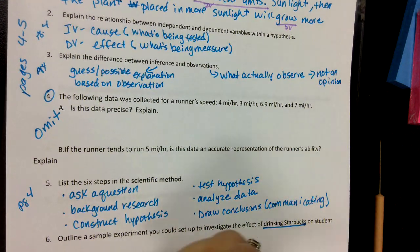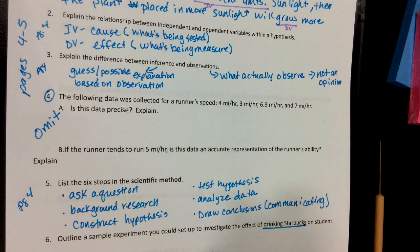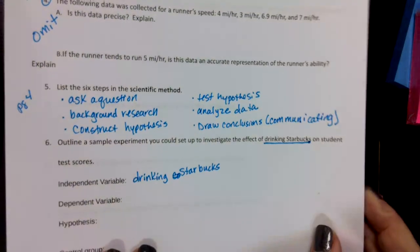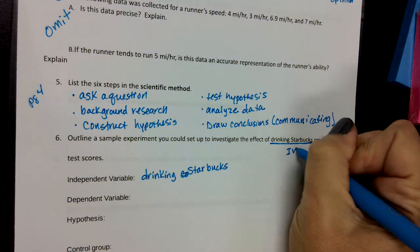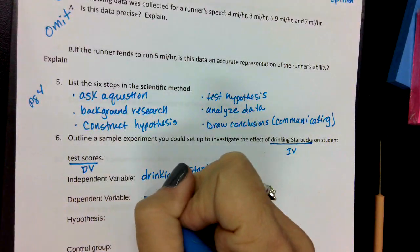Independence. So we're going to put drinking coffee—I mean, oops—Starbucks. Notice it's that specific brand. They would actually need to be even more specific and say what type of Starbucks drink. And then what are we going to measure? Test scores. Test scores. So that's your dependent.